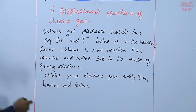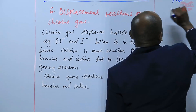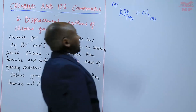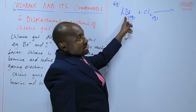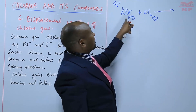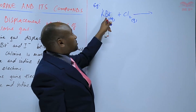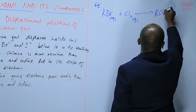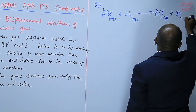Let's look at displacement reactions involving chlorine. For example, if we have potassium bromide solution and then you bubble chlorine gas into that solution, the following reaction will take place. Chlorine is more reactive than bromine, and therefore it can displace bromine from the bromide ions. Chlorine will displace the bromine from the bromide ions, forming potassium chloride solution, and bromine will be displaced out as bromine liquid.